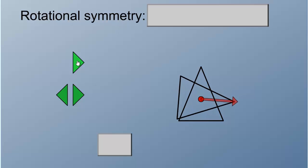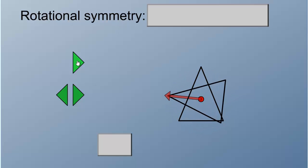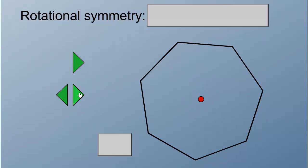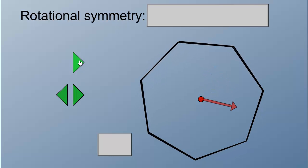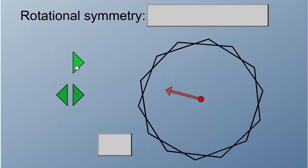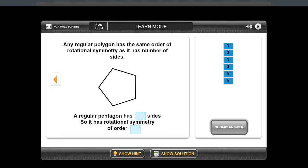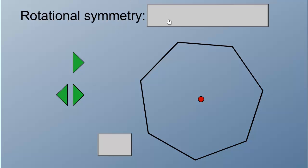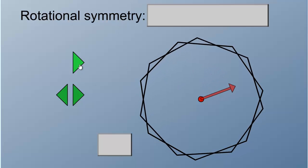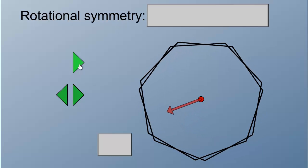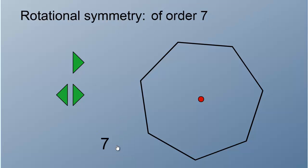Let's do one final one — one, two, three, four. There is none, zero — it doesn't fit at all. Let's do this one also. Any regular polygon has the same number of rotational symmetry as it has number of sides. This one has five sides, so that means it has rotational symmetry of order five. Let me see this again — one, two, three, four, five, six, seven. It fits on itself seven times as you rotate by 360 degrees.